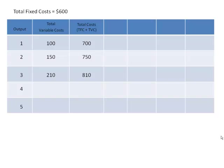When we go to four units of output, we see that our total variable costs increase to $280. Adding that to 600, we see our total costs at four units of output — $880. And the last one, let's wrap it up: our variable costs when we produce five units have gone to $360. Adding that to the 600, we see our total costs at five units of output — $960.